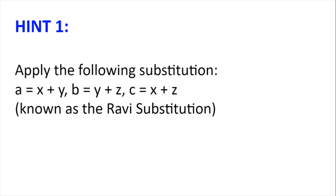Hint number 1: apply the following substitution. Let a be x plus y, let b be y plus z, and let c be x plus z. This will ensure that the triangle inequalities are satisfied, and this substitution is known as the Ravi substitution.